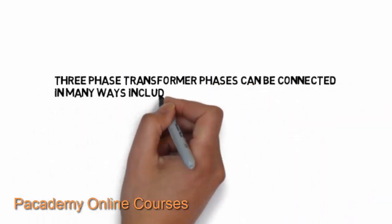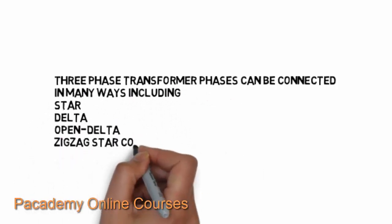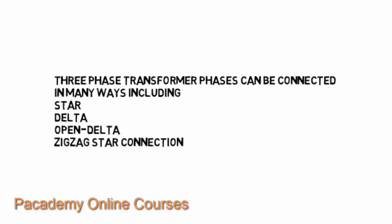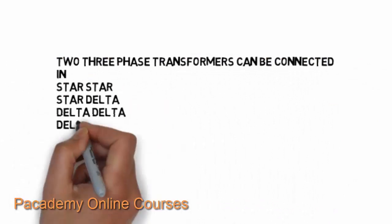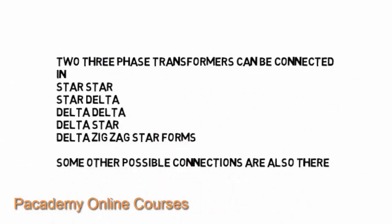The three-phase transformer can be connected in many ways including star, delta, open delta, and zigzag star connection. In a three-phase transformer there are three phases — normally R, Y, B — and the three primary and three secondary phases can be connected with each other. The primary can be grouped in star or delta, giving combinations such as star-star, delta-delta, delta-star, or delta-zigzag. These are the most commonly used forms.